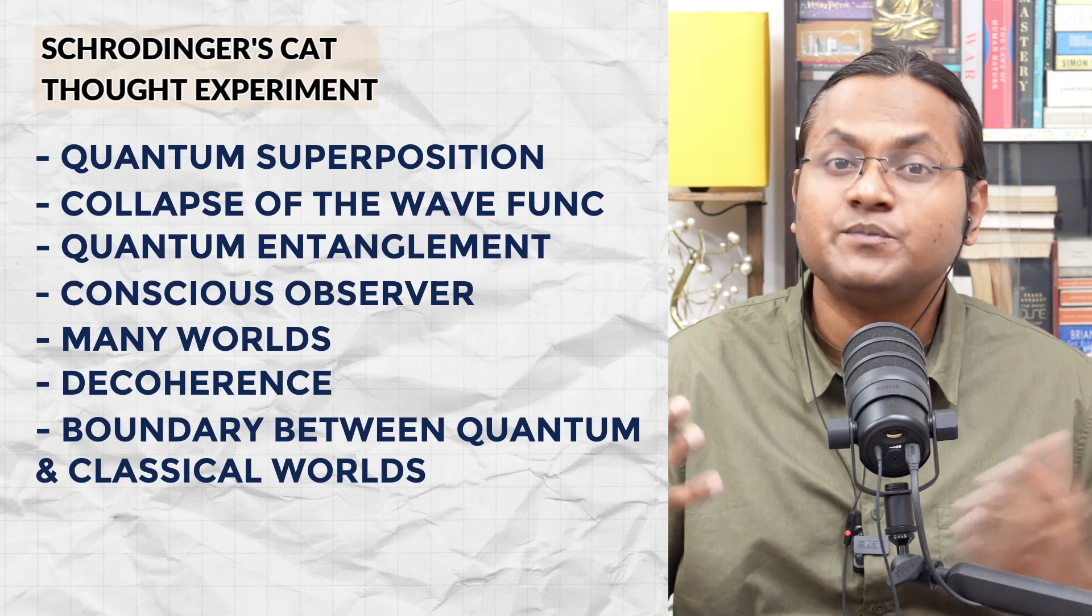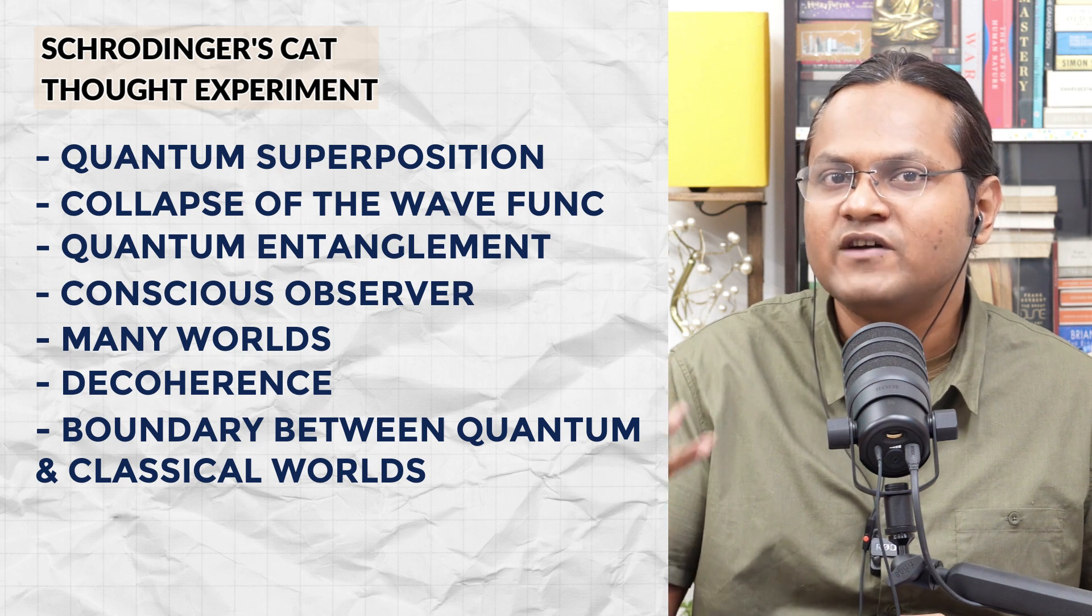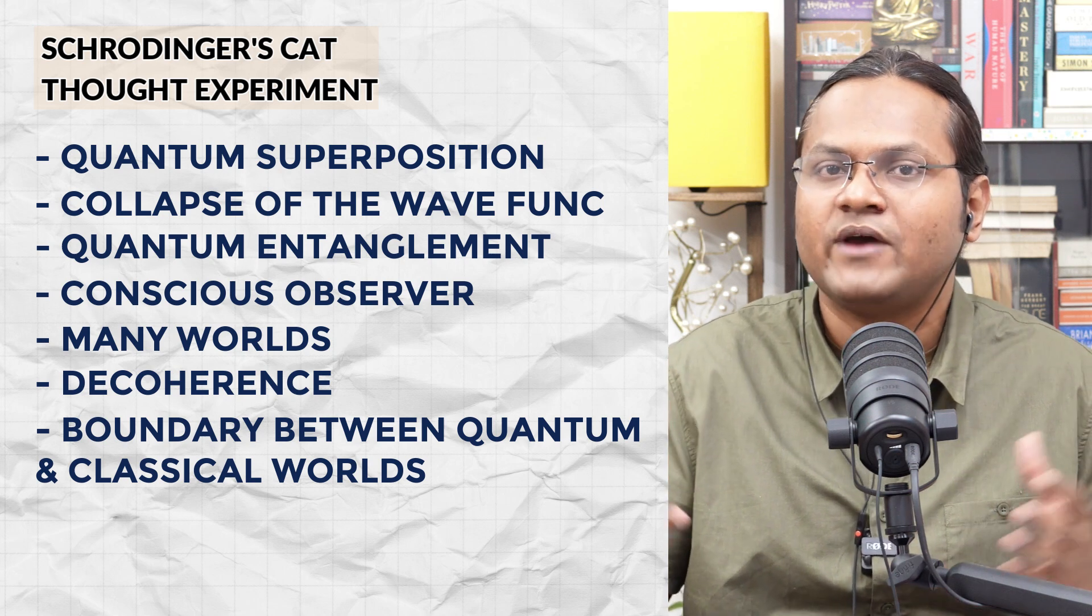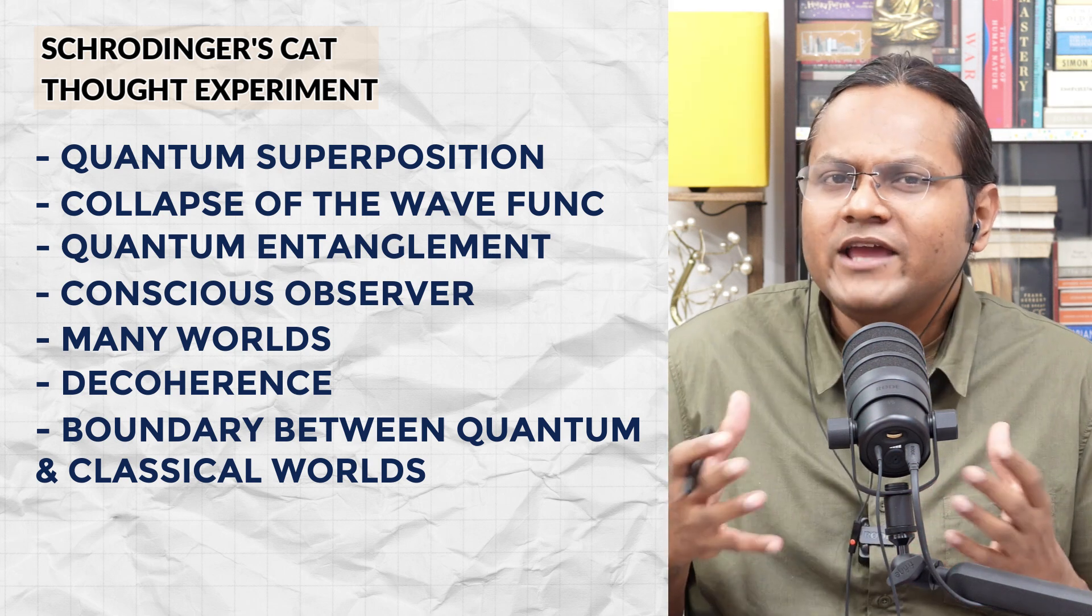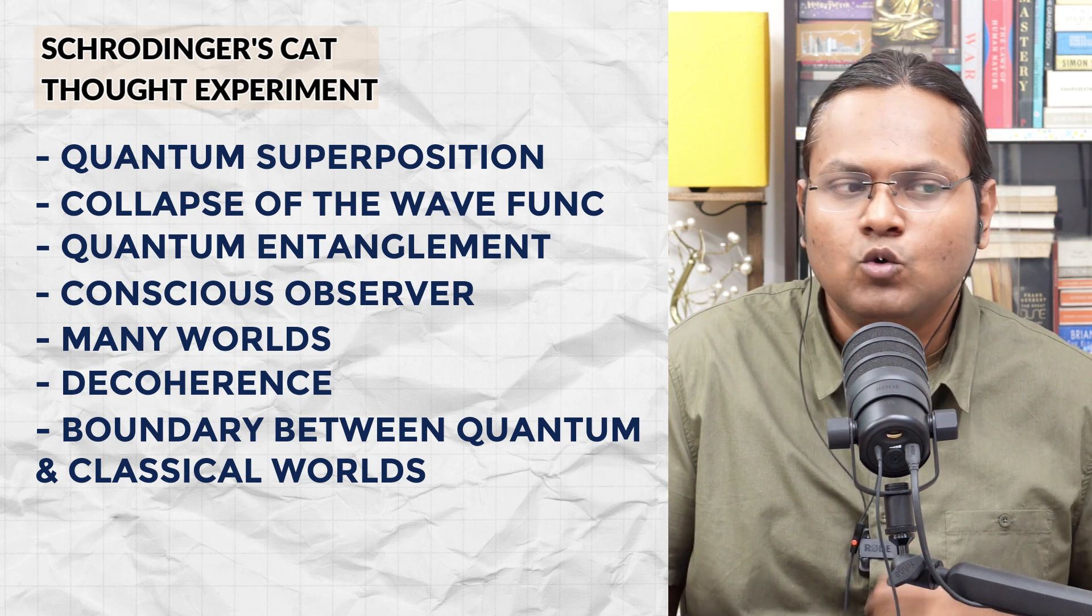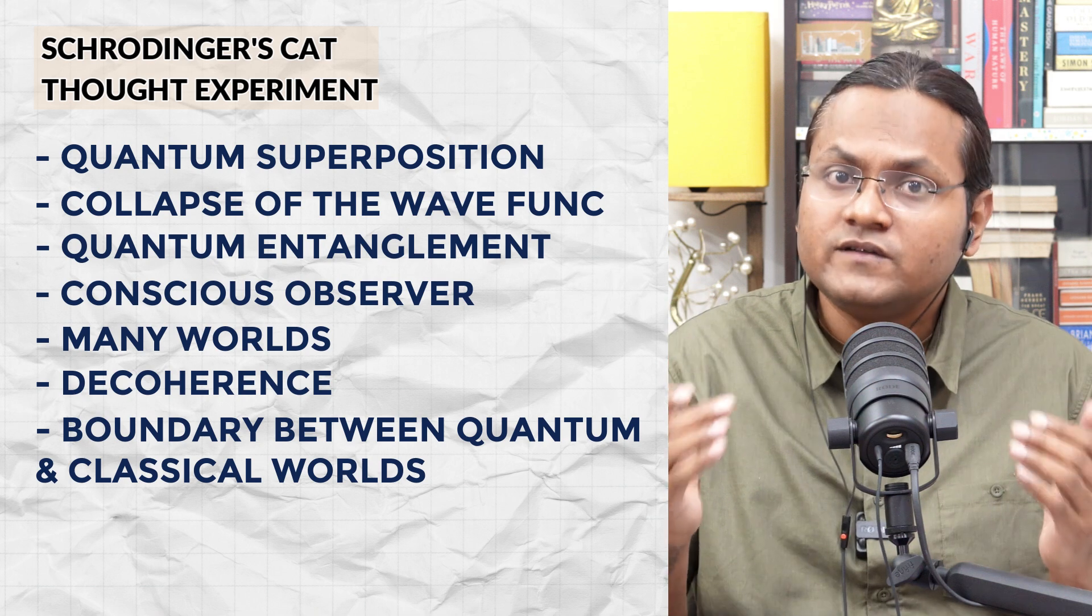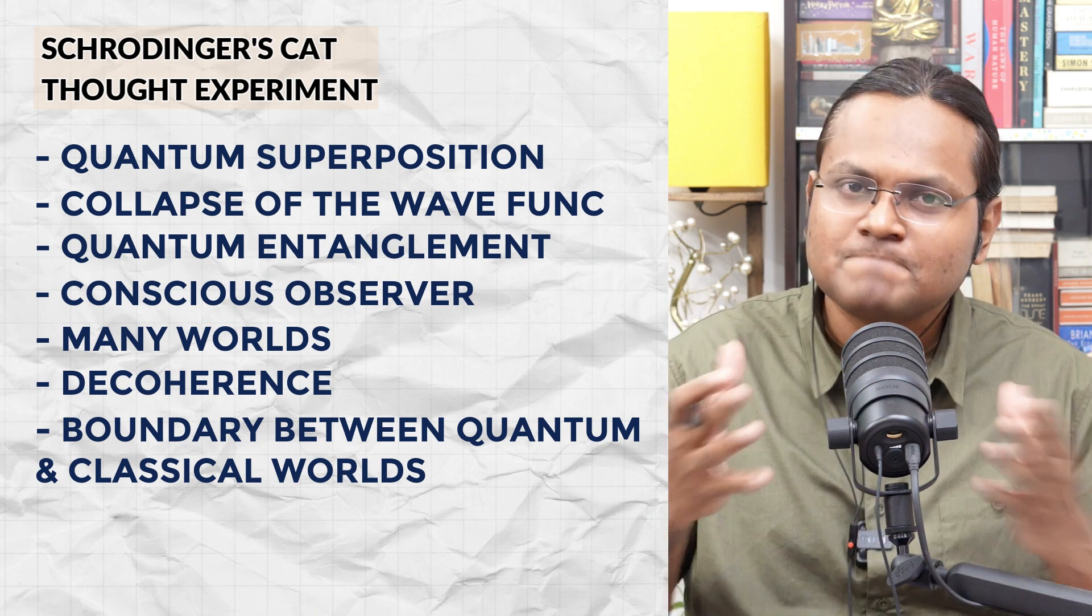Why? Because this experiment encapsulates so much that is peculiar about quantum mechanics, whether it is quantum superposition, collapse of the wave function, quantum entanglement, etc. So why was Schrödinger upset with the interpretation of quantum mechanics? What were his criticisms and were those criticisms resolved in the last 100 years? Let's see.